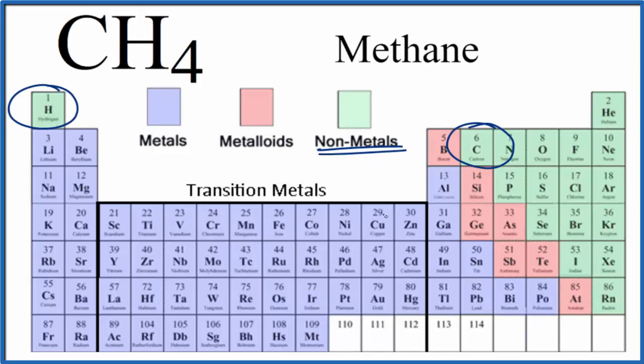When we have two non-metals, we have what's called a covalent bond, also called a molecular bond. So the type of bonds between the carbon and the hydrogens in methane is going to be covalent, also called molecular.